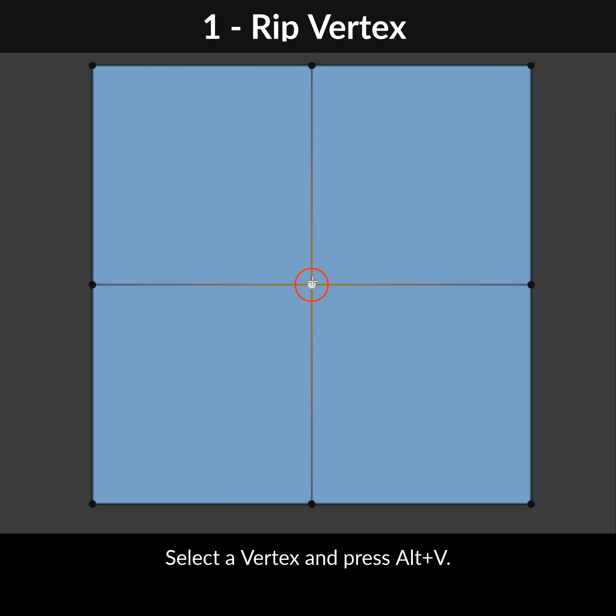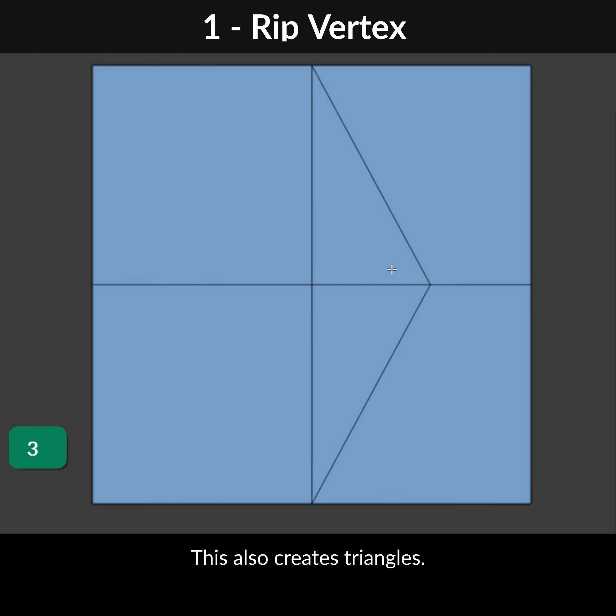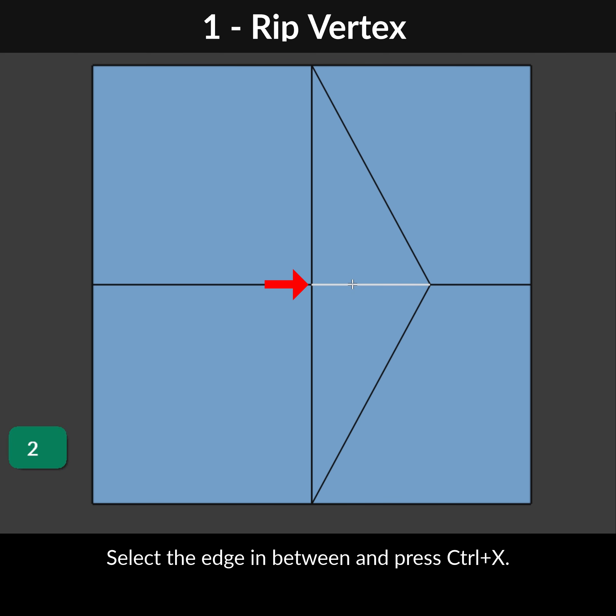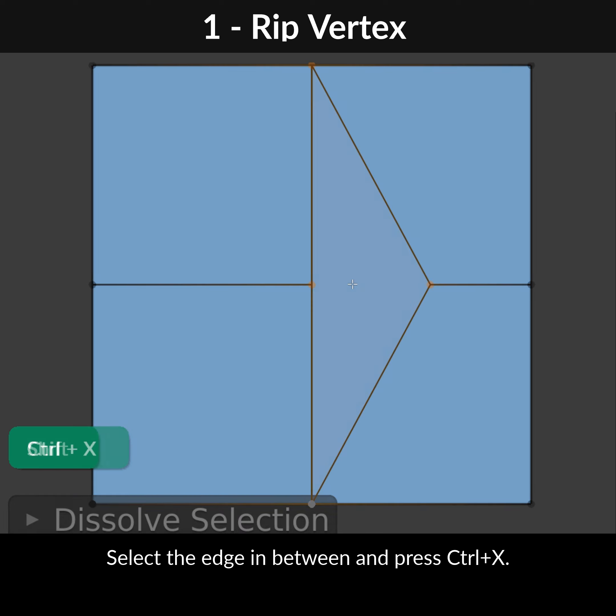Select a vertex and press Alt-V. This also creates triangles. Select the edge in between and press Ctrl-X.